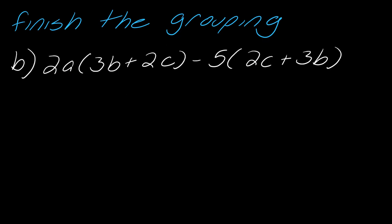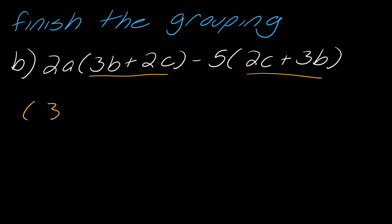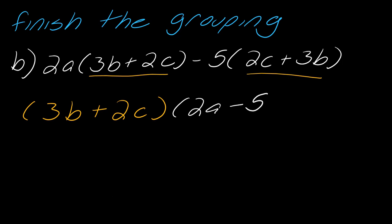Go ahead and pause the video, take a look at this one, and hit play when you're ready. So for this one there is a little bit of a twist. Notice that inside this set of parentheses it says 3b plus 2c, and the other set says 2c plus 3b — but we know that's the same thing. Even though they're not in the same order, they are equivalent, so we're good to go. I can write this as 3b plus 2c times 2a minus 5, and we've finished the grouping.